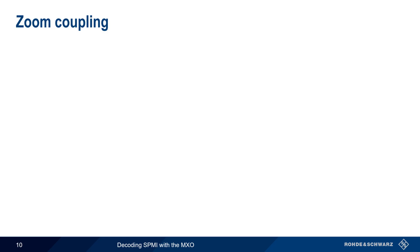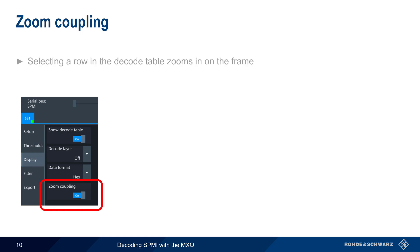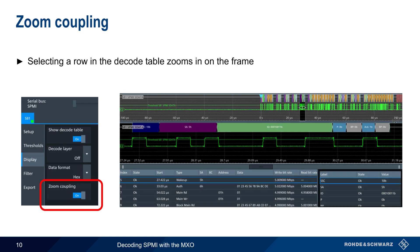One useful feature in the display options is zoom coupling. When zoom coupling is enabled, selecting a row in the decode table zooms in on that frame. For example, here we've clicked on frame 5 in the decode table, and the MXO zooms into that particular frame, showing both the analog Sdata signal.